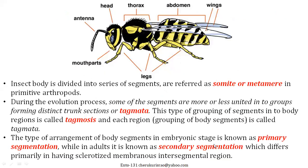The insect is always divided into segments, and these segments are also called somites and metameres. A few segments come together and form a region — for example, the head, or the thorax which has three segments, or the abdomen which generally has eleven segments. The head is a capsule formed out of six segments. When segments come together to form a region, that region is called a tagmata, and this kind of arrangement is called tagmosis.